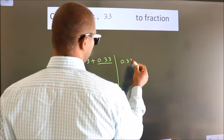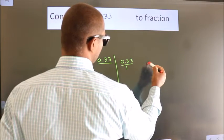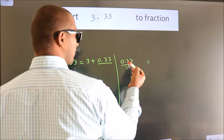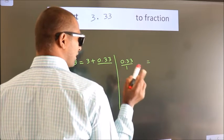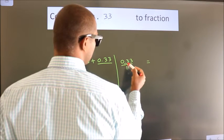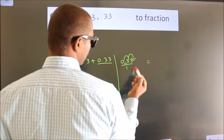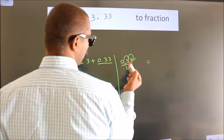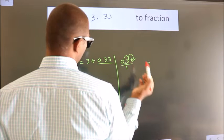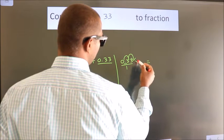So 0.33. To convert this to fraction, we have to move the decimal after two numbers. For that, multiply it with 100.